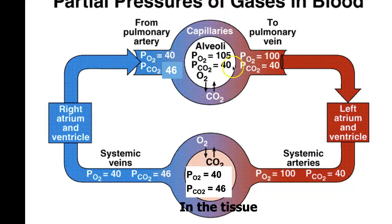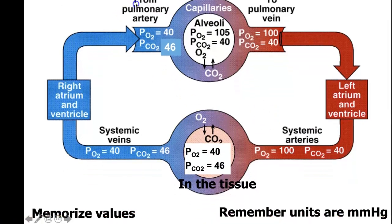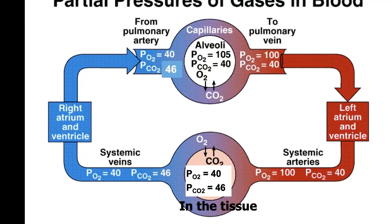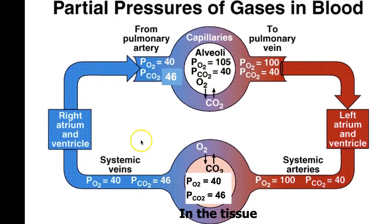So why does this matter? This matters because these partial pressures change as we go through different parts of the blood and for different gases in the blood. I want you to memorize these values and remember that units are millimeters of mercury. Memorize the values here, looking at capillaries and tissues.